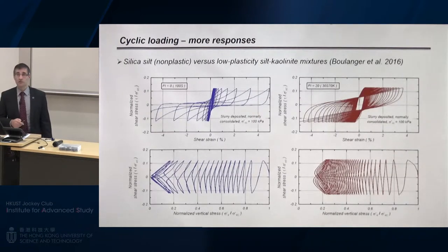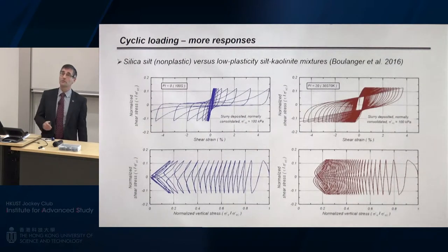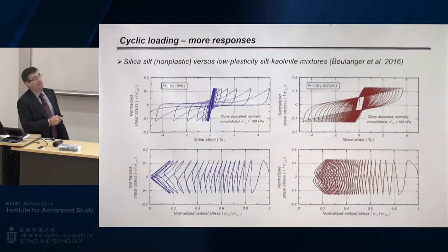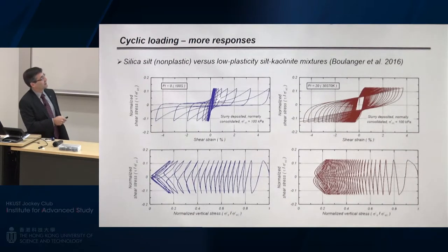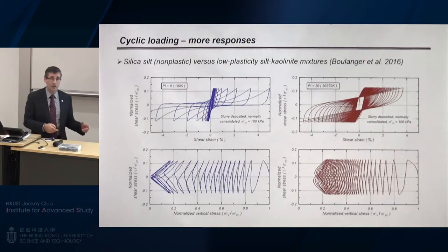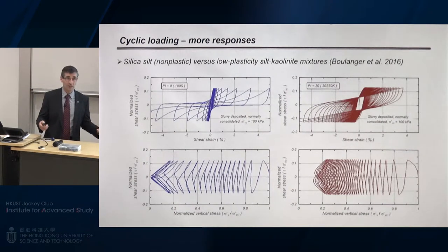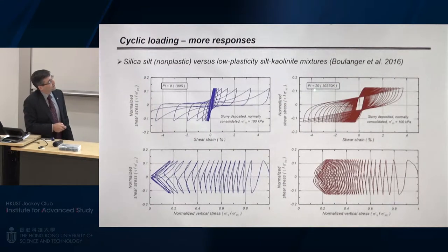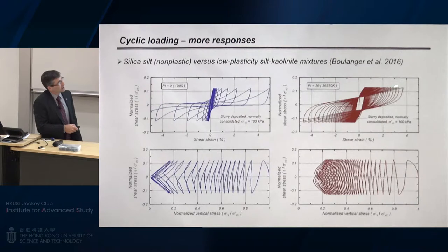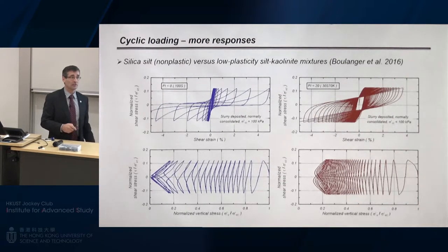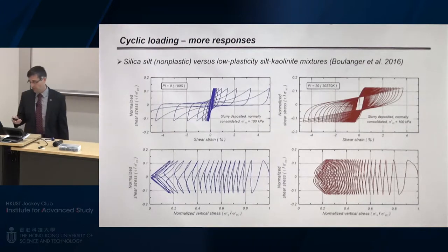These are a couple of other soils to illustrate the range at the lower plasticity end of the spectrum. First is a non-plastic silica silt — here the stress path gets to the origin, 100% excess pore pressure ratio, with very narrow hysteresis loops, looking just like liquefaction of a sand. On the right is something with a little higher plasticity, with thicker hysteresis loops and a much slower rate of strain accumulation than the Cloverdale clay. So you can get a range of behaviors that you want to be able to model.